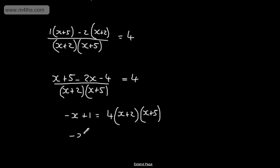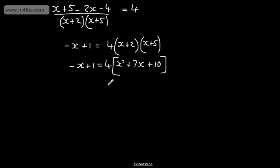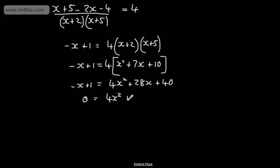Expanding the right-hand side: 4(x plus 2)(x plus 5) gives 4(x squared plus 7x plus 10), which is 4x squared plus 28x plus 40. Setting everything equal: 4x squared plus 28x plus 40 equals minus x plus 1. Rearranging to standard form, 4x squared plus 29x plus 39 equals 0. We have a quadratic in the form ax squared plus bx plus c equals 0, so we use the quadratic formula.